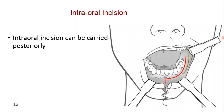Intra-orally, the incision can be carried straight posteriorly to the gingival buccal sulcus and then laterally within the sulcus approximately 5 mm from the gingival margin, as far as is needed to provide adequate exposure of the mandible.